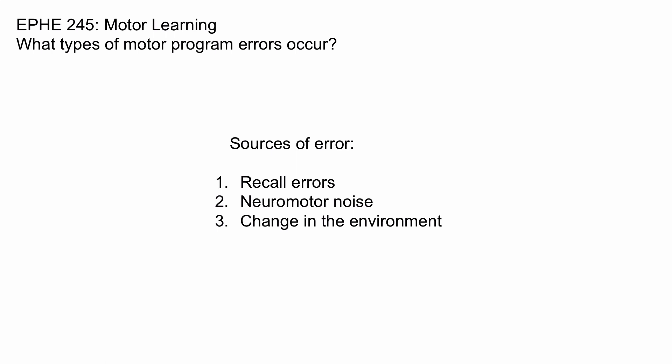So, why do motor program errors occur? Three reasons. One, we recall from memory incorrectly and thus have an incorrect motor command. Two, we have neuromotor noise brought about by the state of the body itself, again resulting in an incorrect motor command. And third, we have the correct motor command, but the world unexpectedly changes and we were unable to successfully execute the skill.